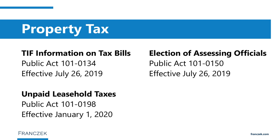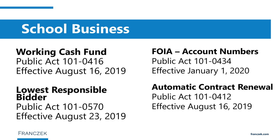Turning to school business operations, the first item involves the working cash fund, which has been the subject of significant attention and litigation. Public Act 101-416 is a technical cleanup of the working cash fund article of the school code. It adds evidence-based funding to the formula for the maximum amount of working cash funds and adds anticipation of evidence-based funding as a reason to lend money from the working cash fund to another fund, bringing the article in line with the new funding source under the evidence-based funding model.